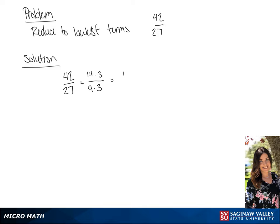So we have 14 over 9 times 3 over 3, which we know is equal to 1. So we have 14 over 9 times 1, which is equal to 14 over 9.